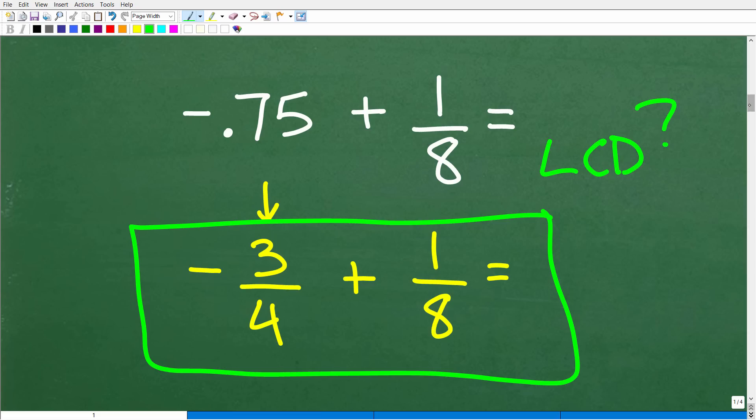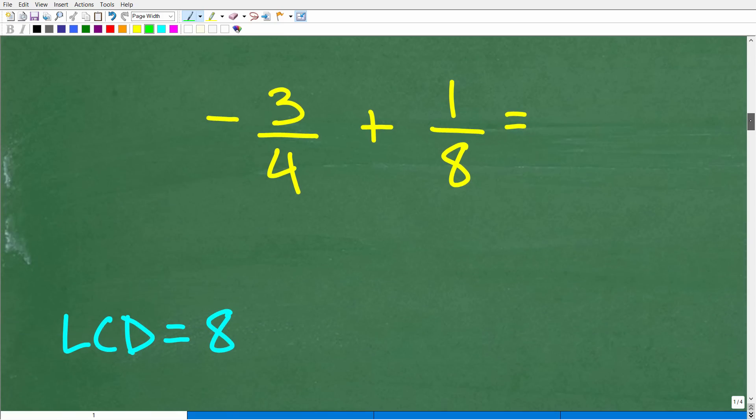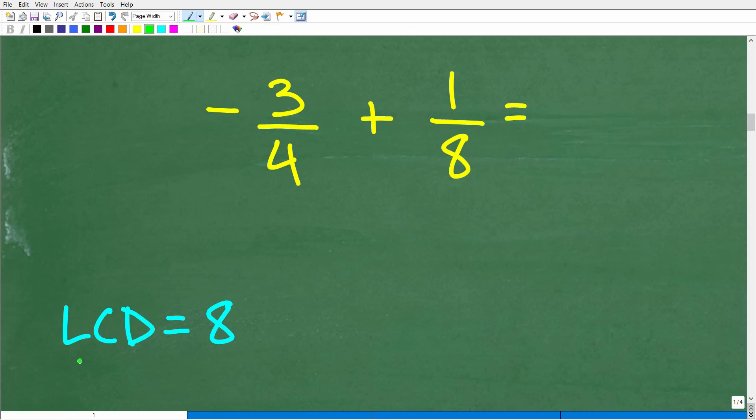Okay, so how do we find the LCD? Well, that's a whole topic in and of itself. But hopefully you're like, hey, Mr. YouTube Math Man, this is really easy. The LCD here, or the lowest common denominator, is 8. Right, because 8 is the smallest number that both 8 and 4 divide into without a remainder.